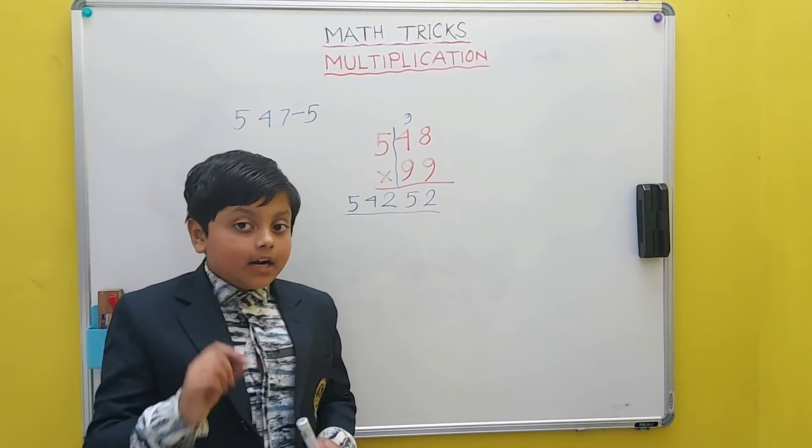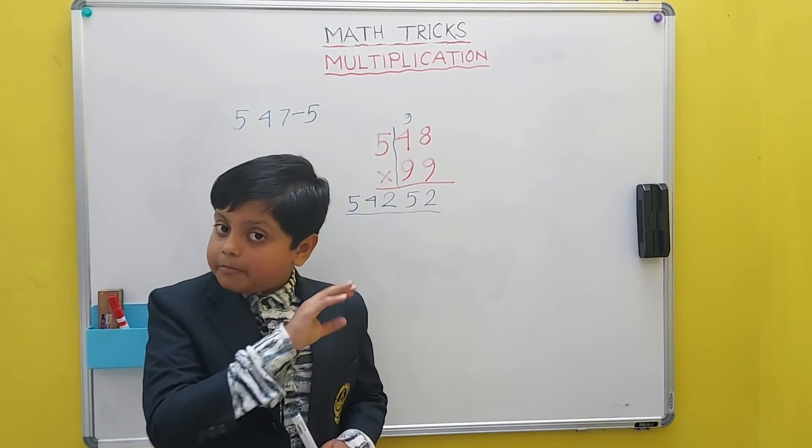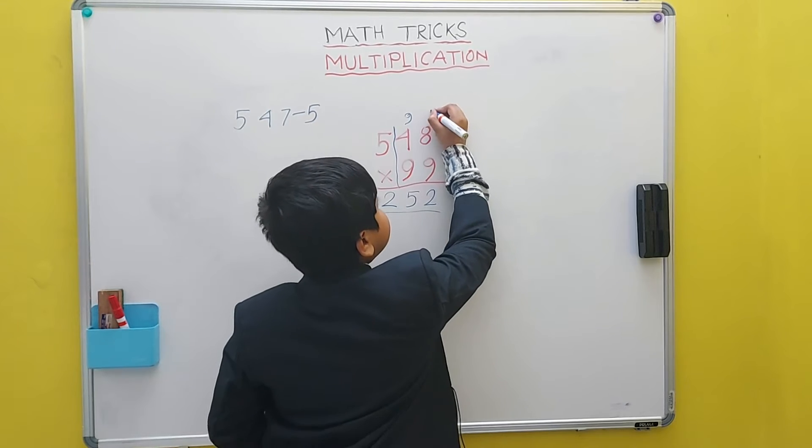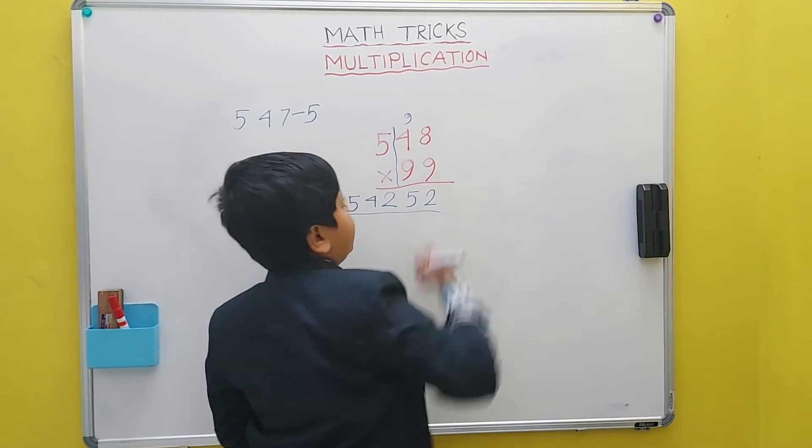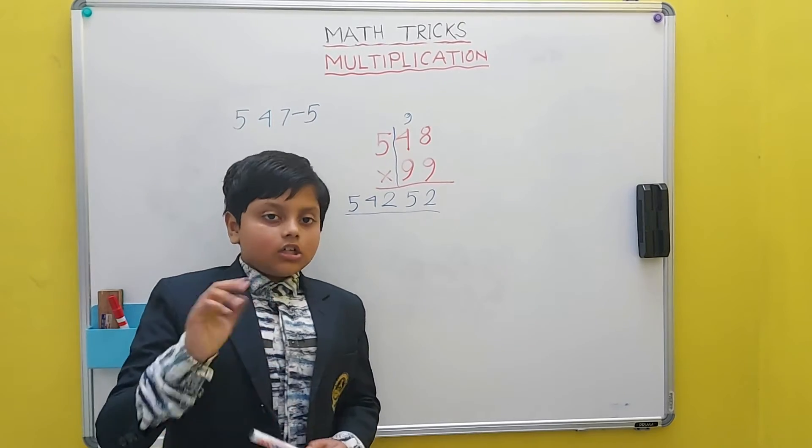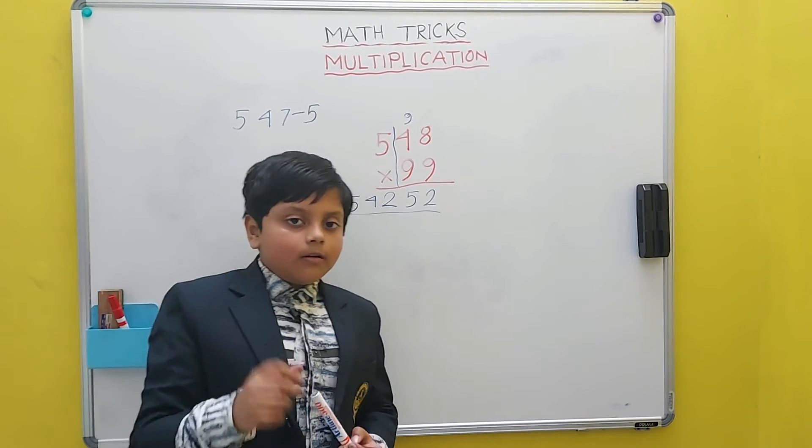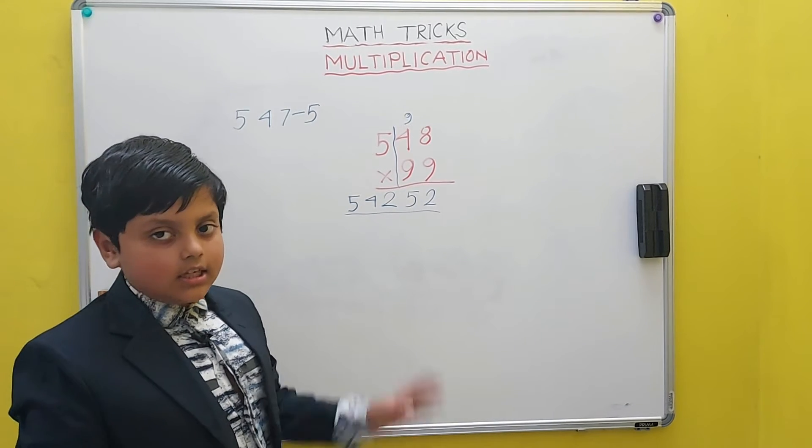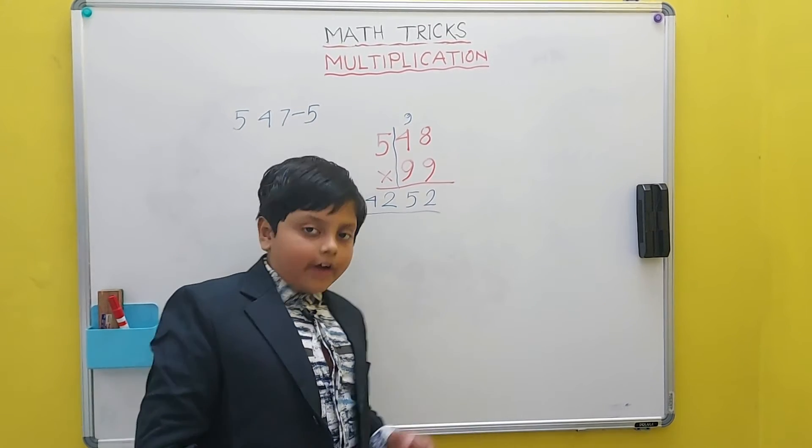Now, the last number we don't have to subtract it from 9. We have to subtract it from 10. So, 8 which is the last number minus 10 equals 2. We have written 2 and this is our final answer: 54252.